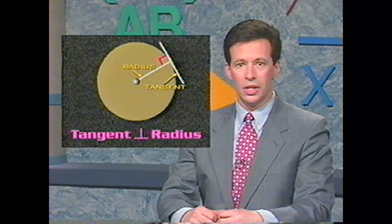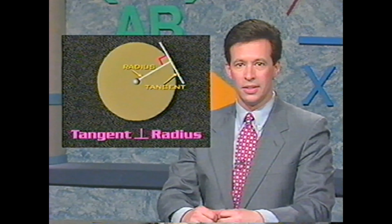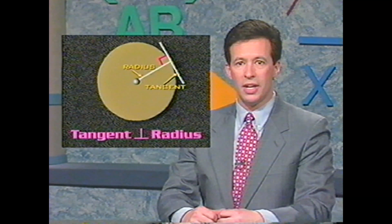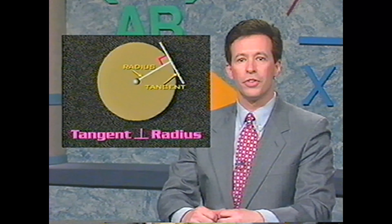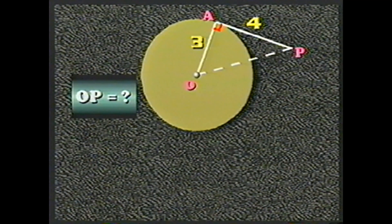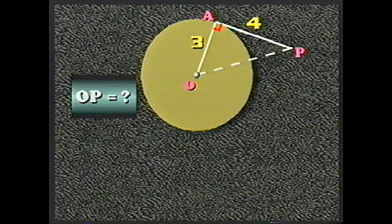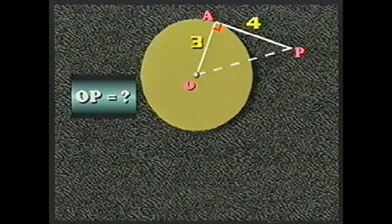If we extend a chord in both directions, we have a line that intersects the circle in two points — we call that a secant line. A line that touches the circle in exactly one point is called a tangent line. To review: a line segment between two points of the circle is a chord; a chord that goes through the center is a diameter; a line touching the circle exactly once is a tangent line; and a line intersecting the circle in two points is a secant.